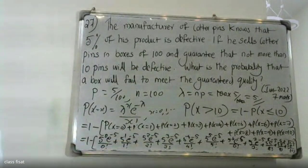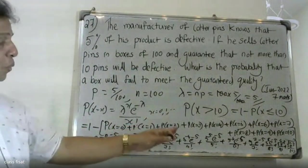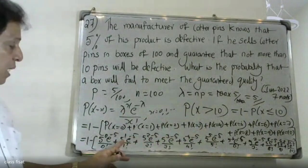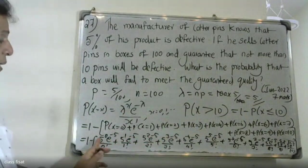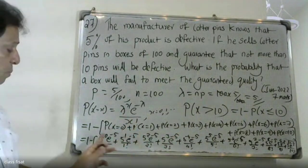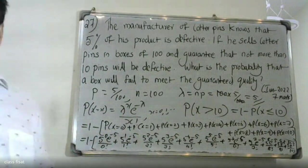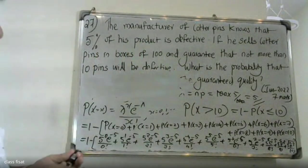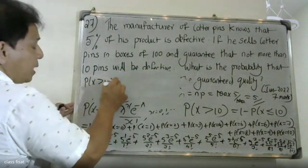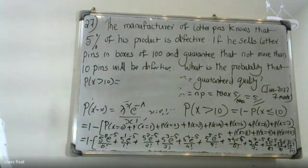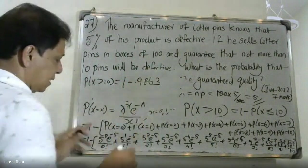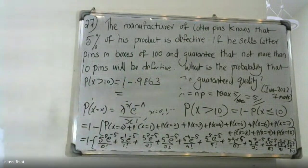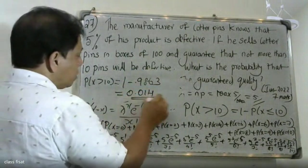Let's calculate the values. For x equals 0, 1, 2, 3, 4, 5 and continuing through 10, note that e raised to minus 5 is a common factor throughout. Taking all these values together, the sum P(X ≤ 10) equals approximately 0.9863. Therefore, P(X > 10) equals 1 minus 0.9863.